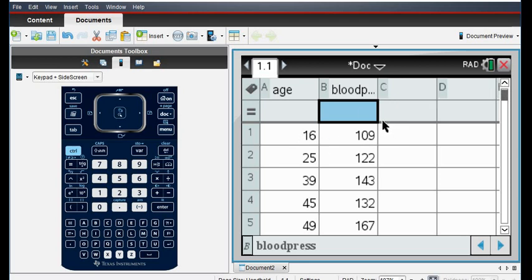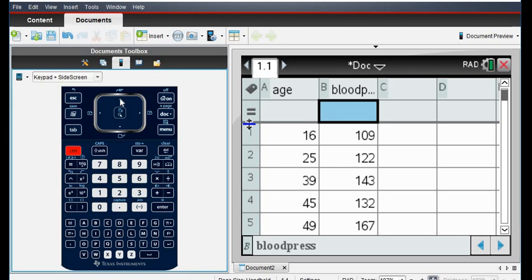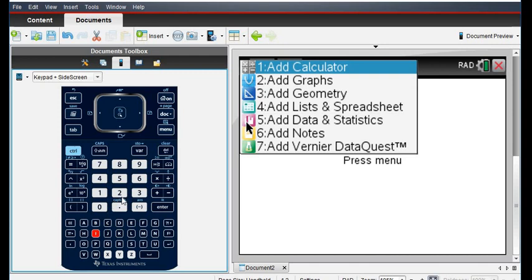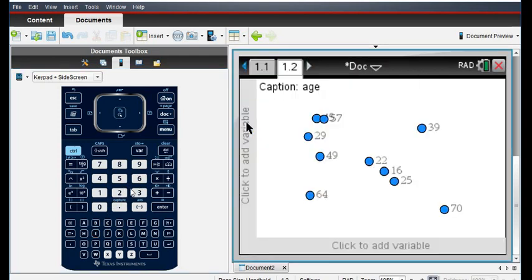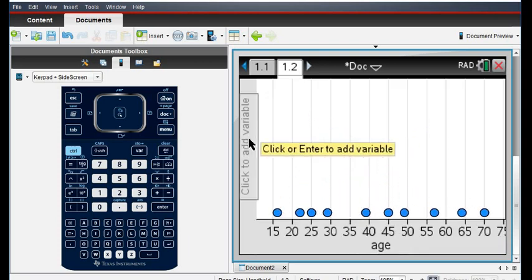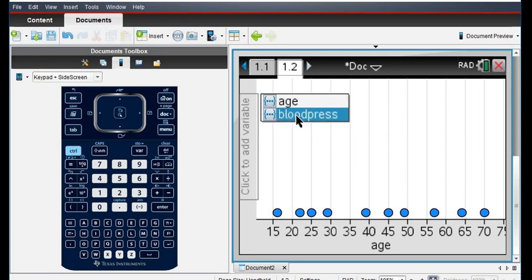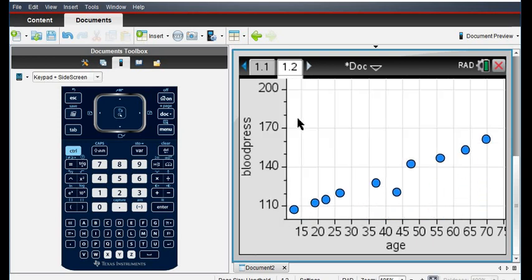So when you're coming up with a regression line, you always want to look at the scatter plot to see that a linear regression is acceptable, because there's also quadratic regression, or exponential regression, or logarithmic regression. So you want to look at your scatter plot before you do anything. So I'm just going to hit control and I, and I'm going to open up a new data and statistics screen. So option five. I'm going to click down here to add a variable, and I want to add age.